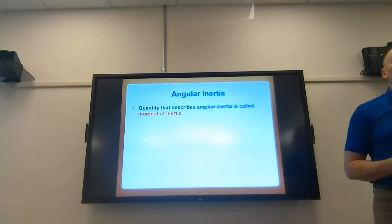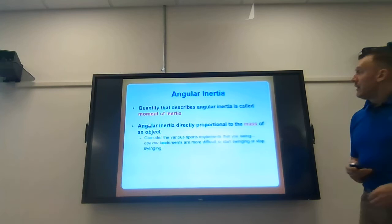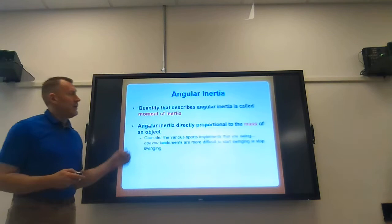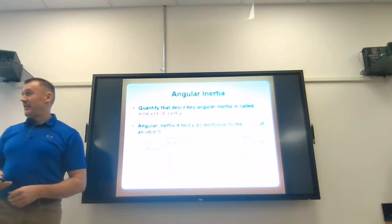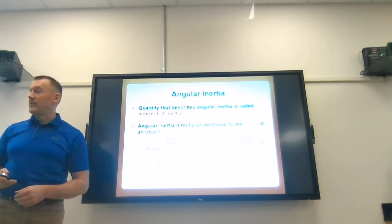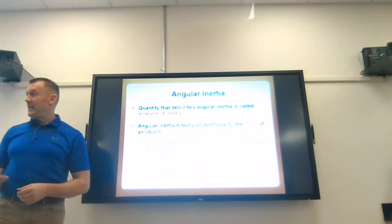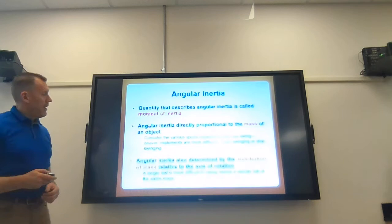Angular inertia - another way of describing that is moment of inertia. Angular inertia is directly proportional to the mass of an object or body. Consider sports implements that you swing - rackets, clubs, bats. Heavier implements are more difficult to start swinging or stop swinging. That's angular inertia: resistance to angular motion.